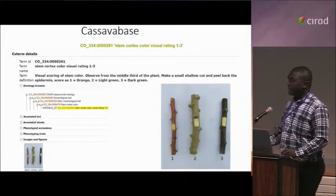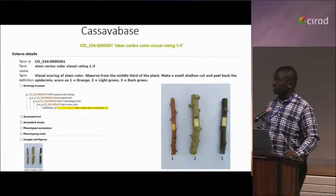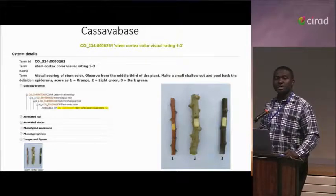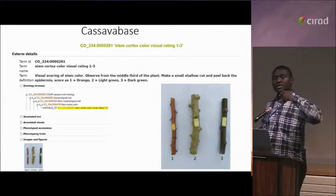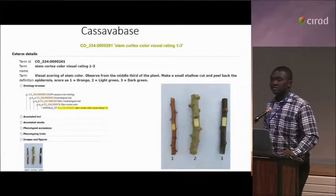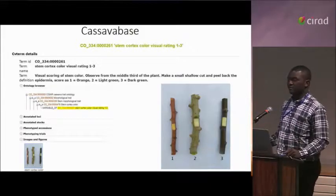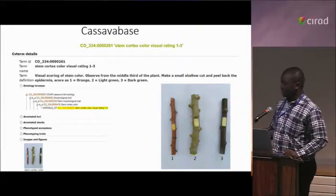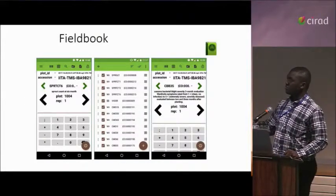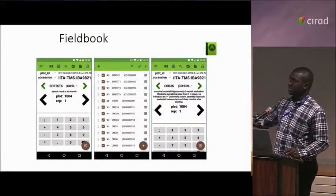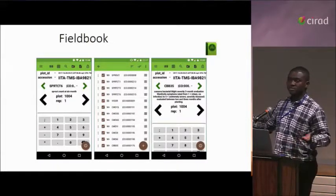We also have images associated with some of our traits. These images can be placed in the resource folder in the FieldBook application to guide technicians in the field while collecting data, in case there is an argument about the scale of measurement. You download the ontology from CassavaBase, and this is how it looks in the FieldBook with the different IDs. Then you import your field layout and phenotype.